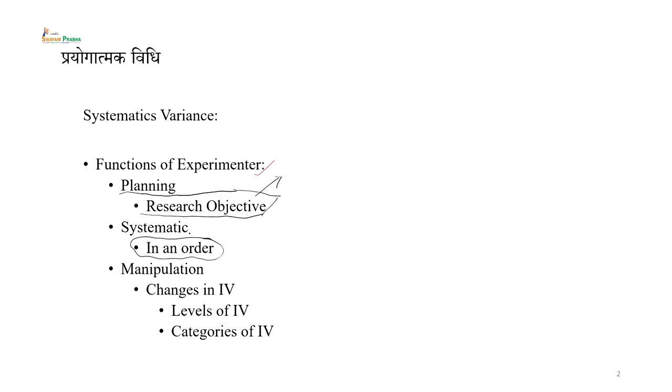दूसरा कार्य है कि जो manipulation propose करे, design करे, implement करे — वो systematic हो। Systematic का अर्थ है किसी एक निश्चित order में हो। ऐसा नहीं कि एक condition में एक अलग order follow करें और दूसरी condition में दूसरा order। यह order systematic हो, pre-planned हो, ताकि हम independent variable का प्रभाव dependent variable पर देख सकें और cause and effect का model establish कर सकें।